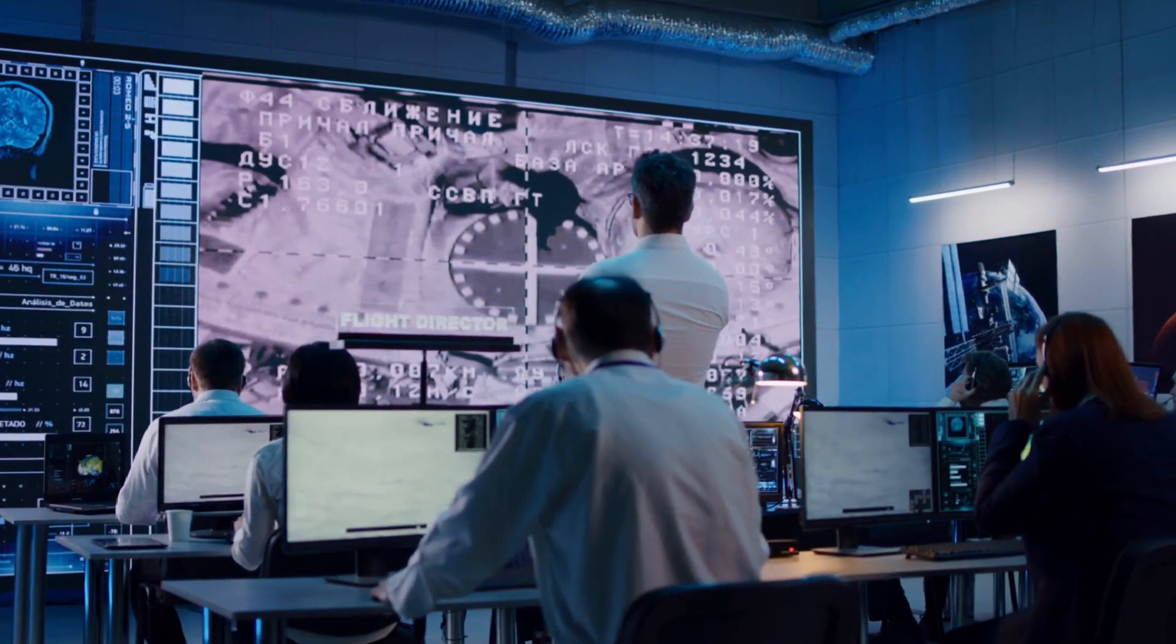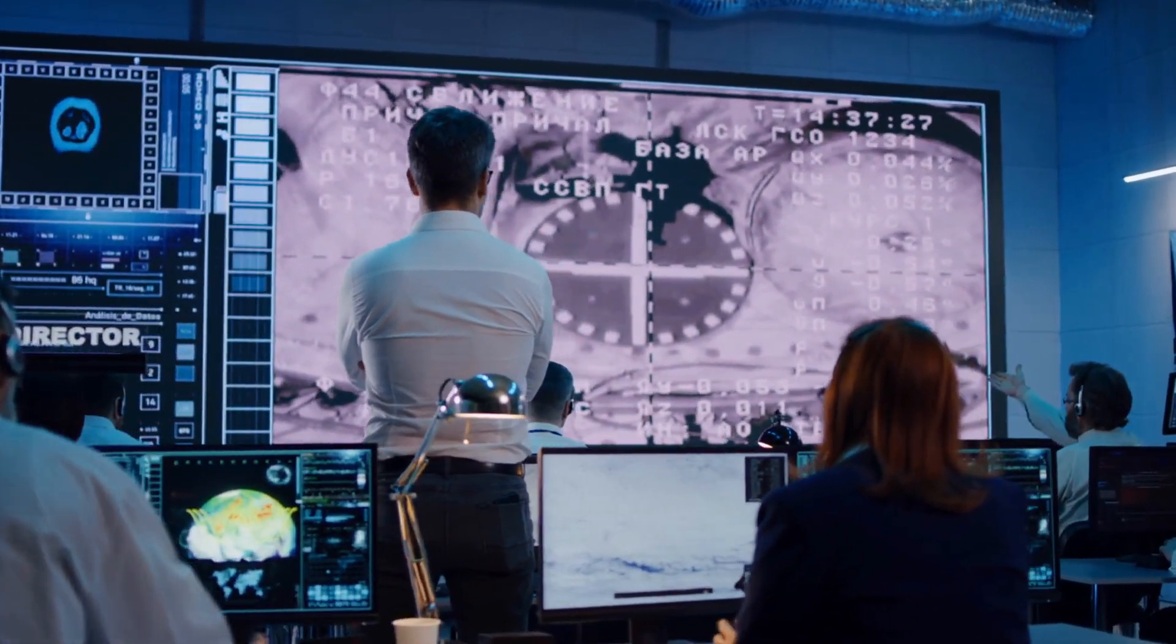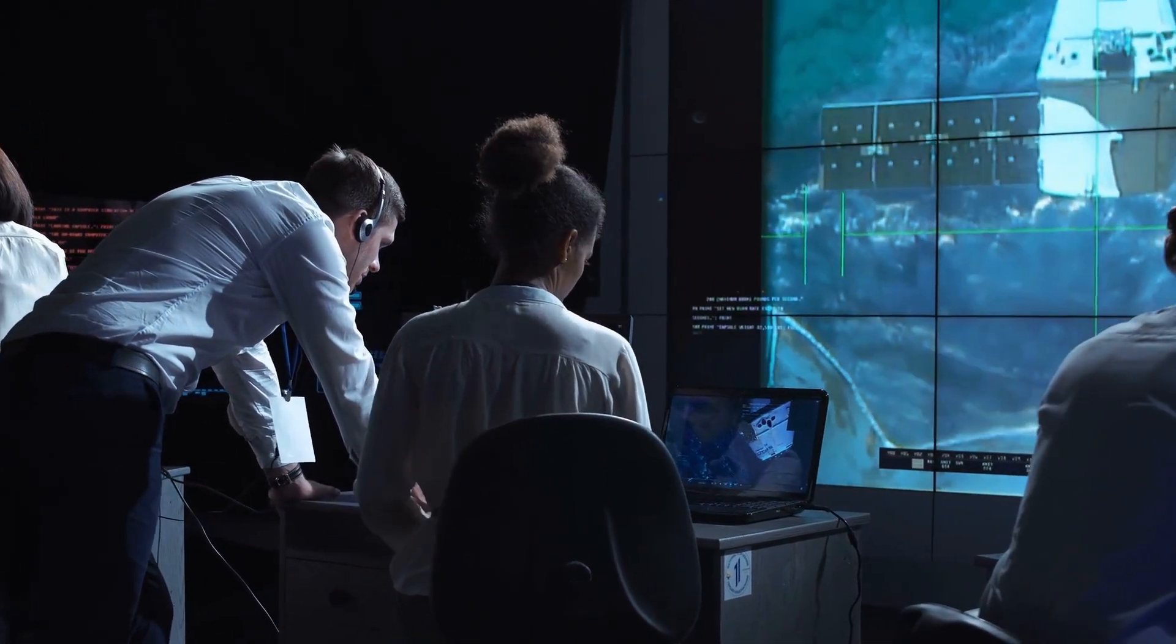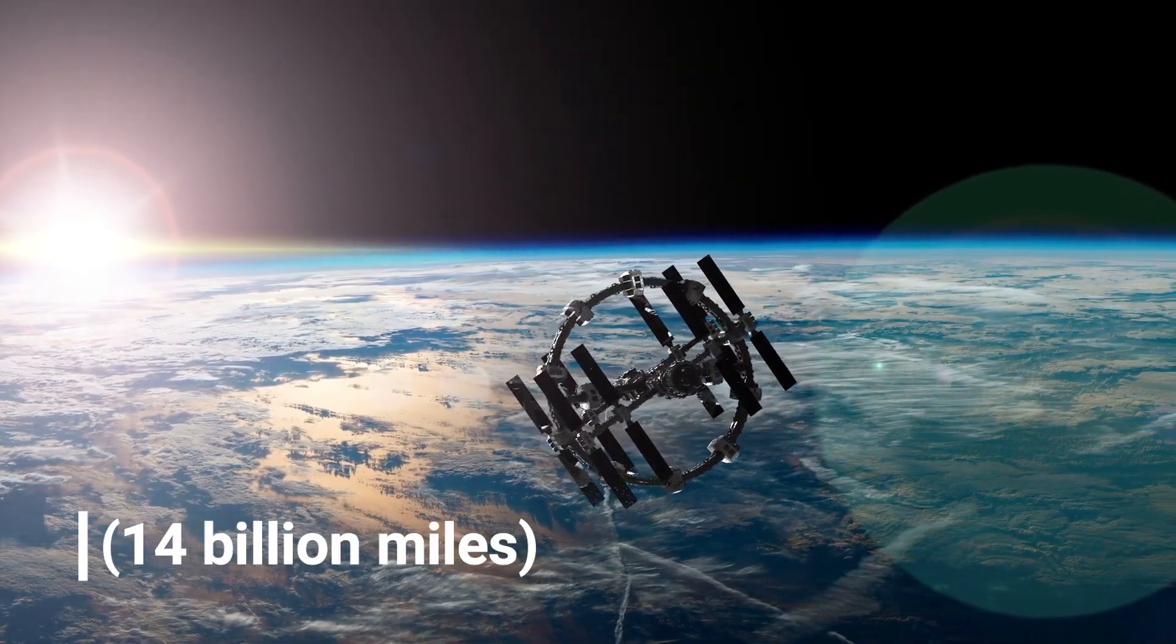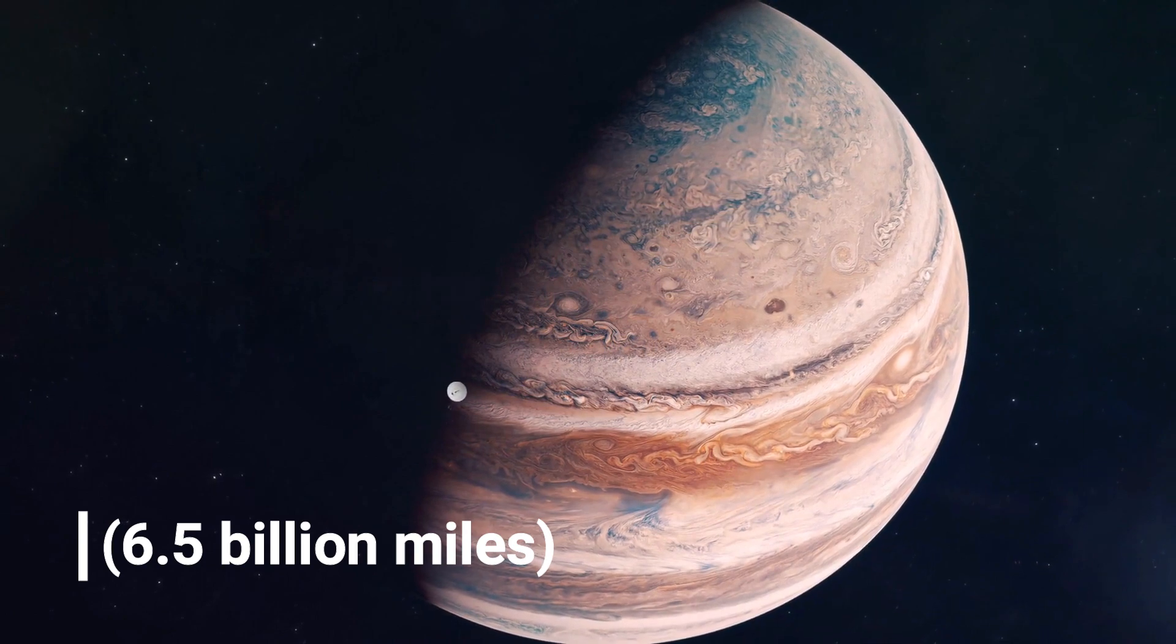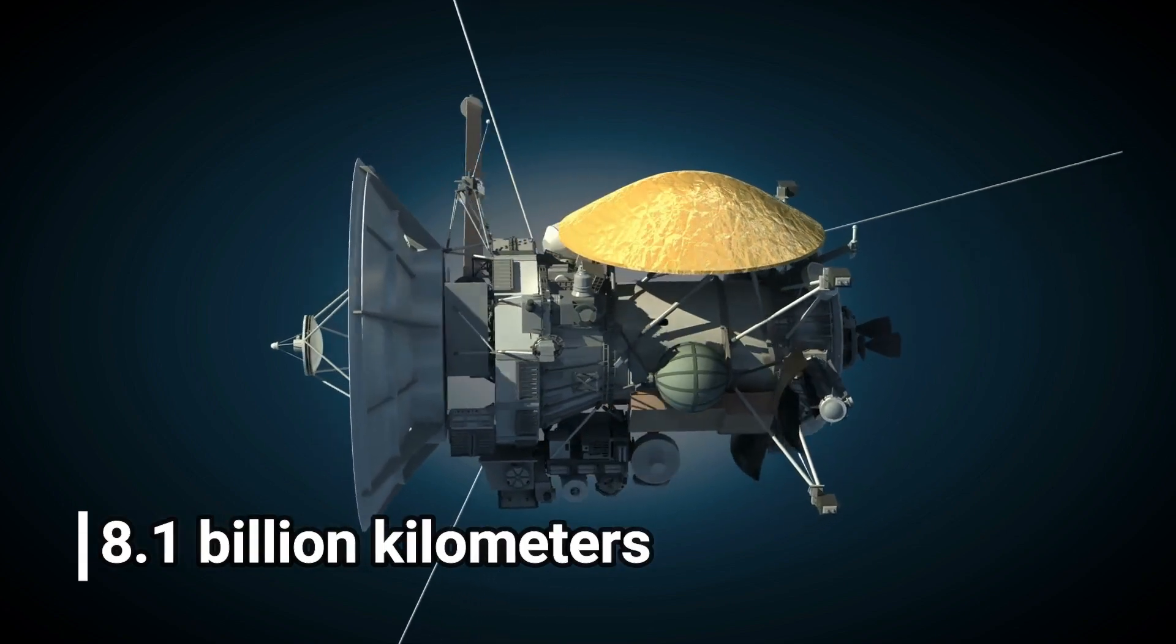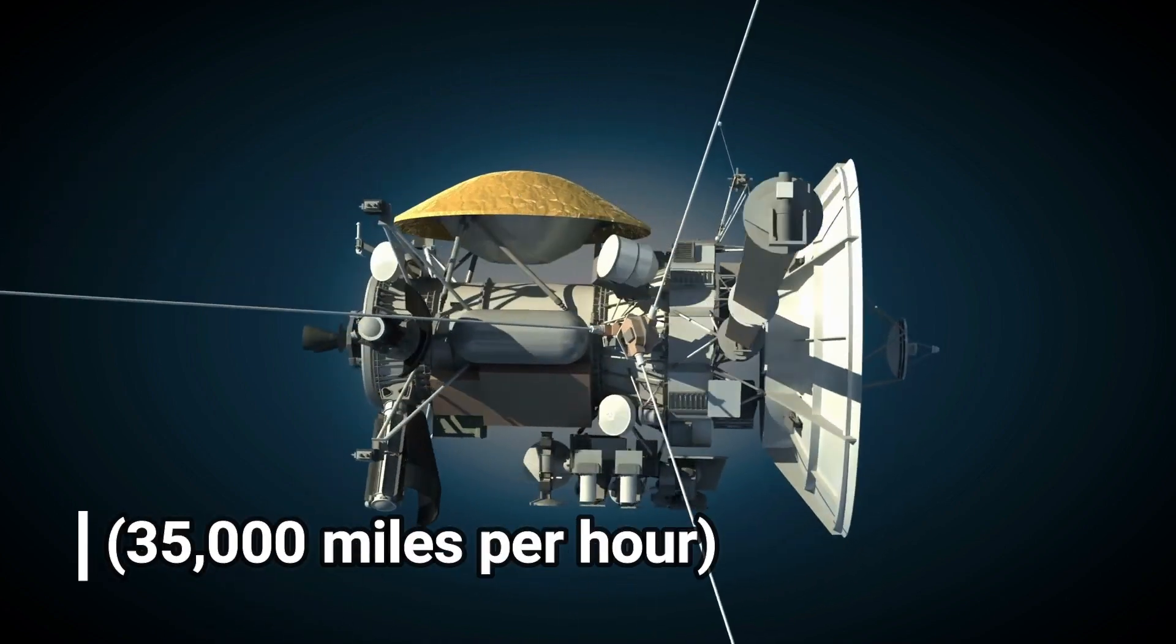Science data are returned to Earth in real time to the 34-meter deep space network antennas located in California, Australia, and Spain. Both spacecraft have enough electricity and altitude-controlled propellant to continue operating until about 2020, when electrical power produced by the RTGs will no longer support science instrument operation. At that time, Voyager 1 will be almost 150 times farther from the Sun than the Earth, more than 20 billion kilometers, almost 14 billion miles away. On February 17, Voyager 1 will be 10.4 billion kilometers or 6.5 billion miles from Earth and is departing the solar system at a speed of 17.4 kilometers per second, or about 39,000 miles per hour. At the same time, Voyager 2 will be 8.1 billion kilometers or 5.1 billion miles from Earth and is departing the solar system at a speed of 15.9 kilometers per second, or 35,000 miles per hour.